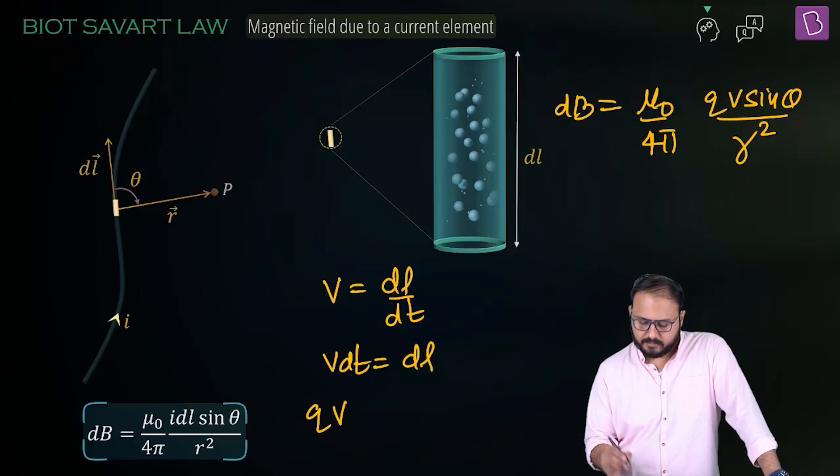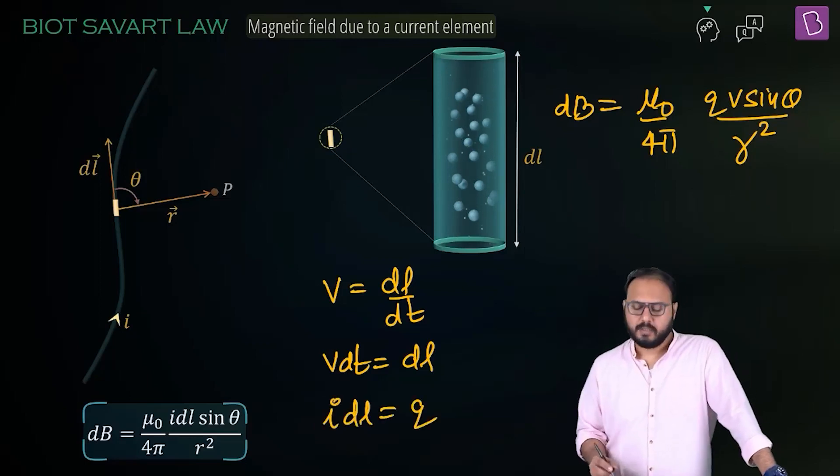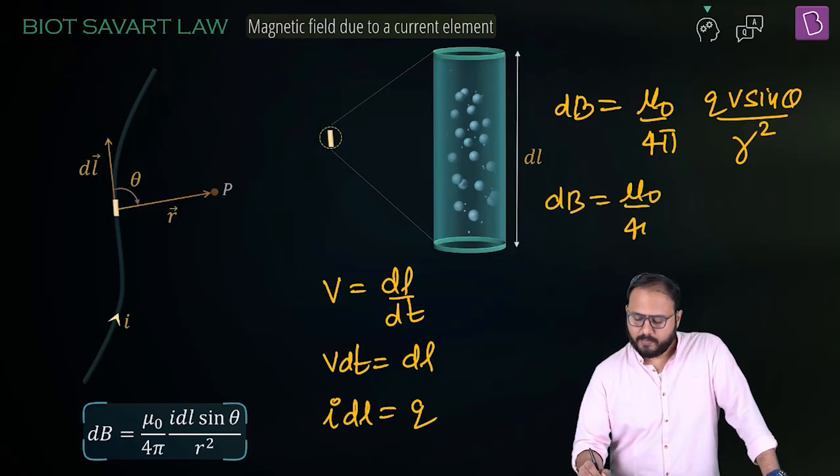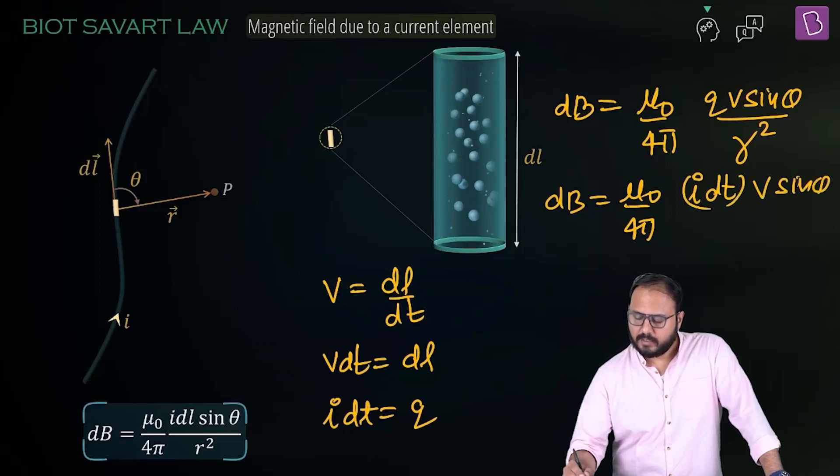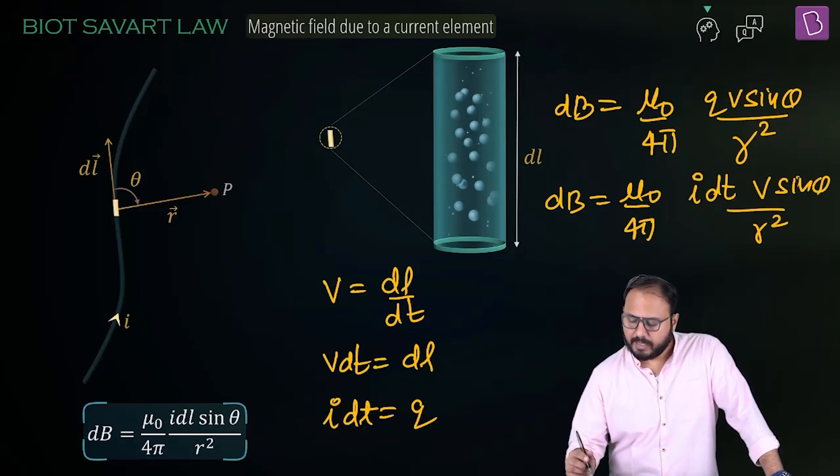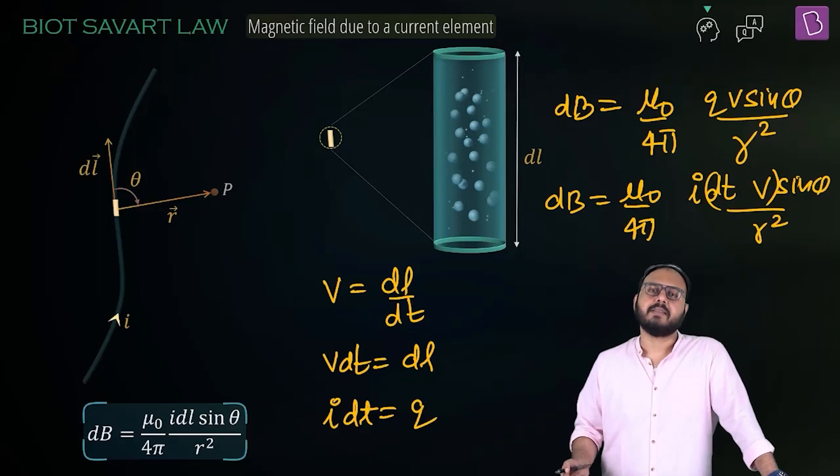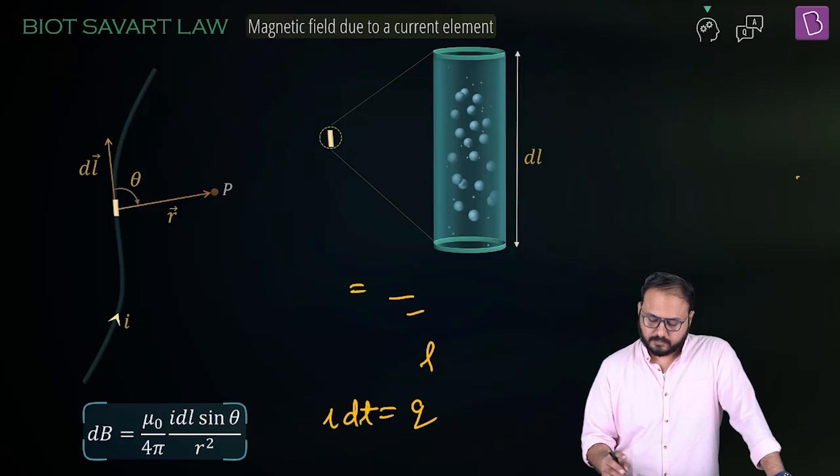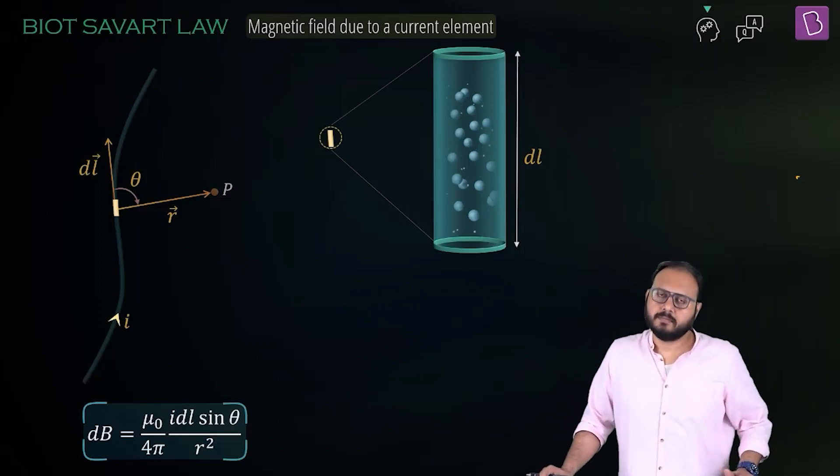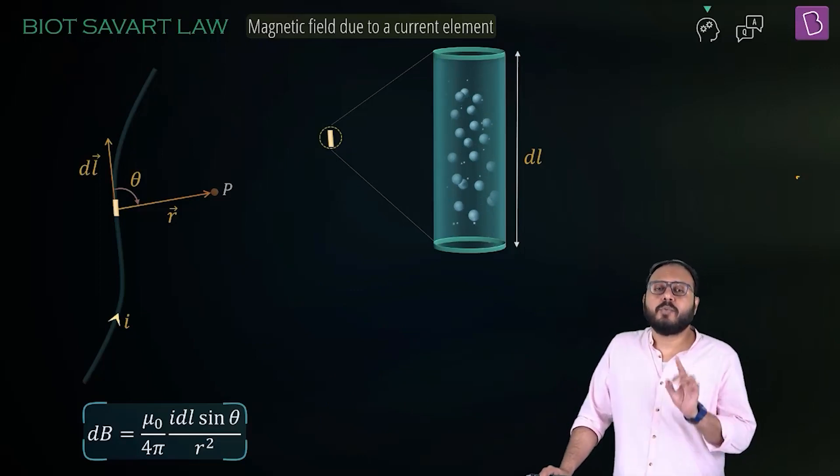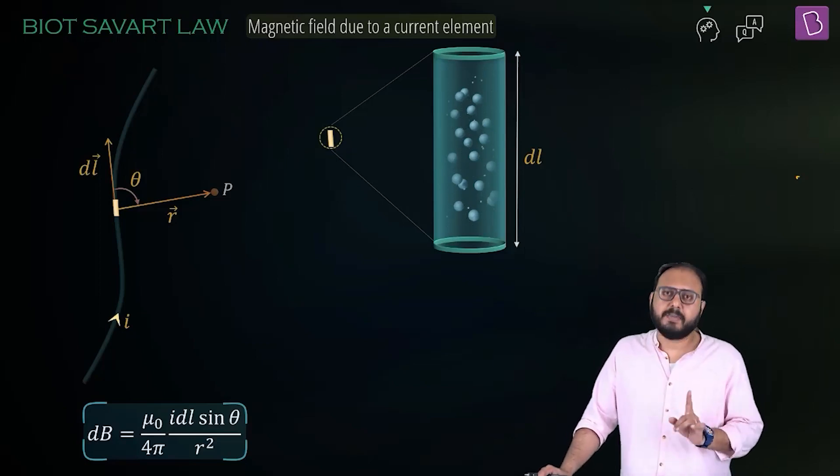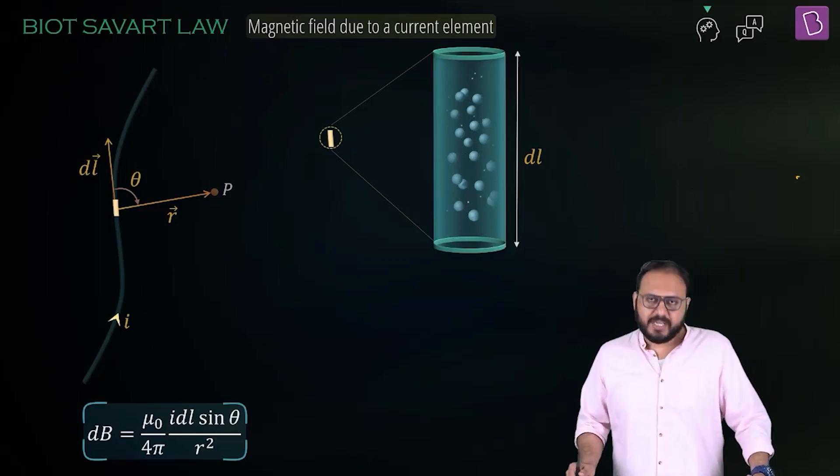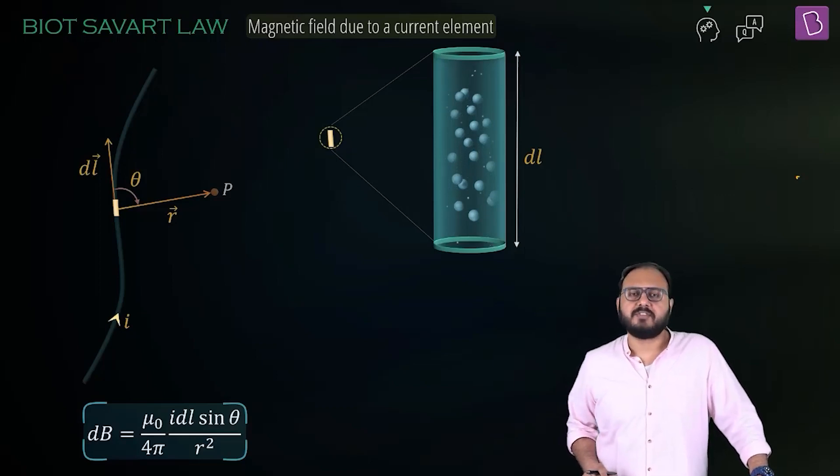QV - Q is IDT. So that dB becomes μ₀/4π IDT V sin θ / R². And instead of IDT, decouple them and couple V DT. What is V DT? DL. That's how IDL sin θ / R² comes. Get it? So dB is μ₀/4π IDL sin θ / R². Nothing has changed as far as μ₀/4π is concerned.